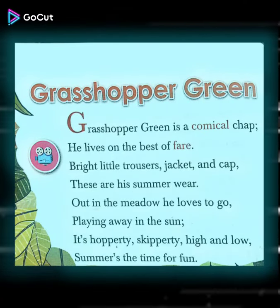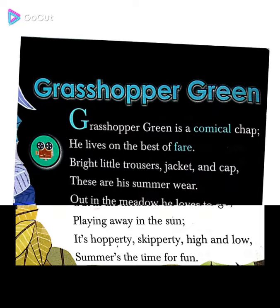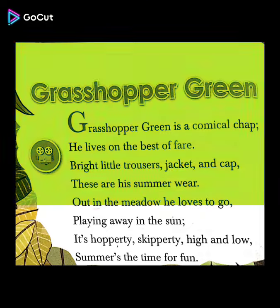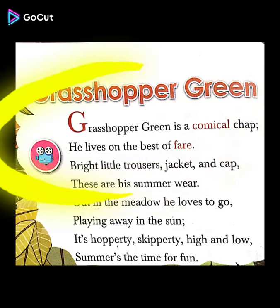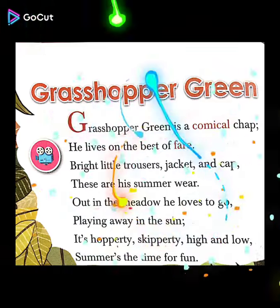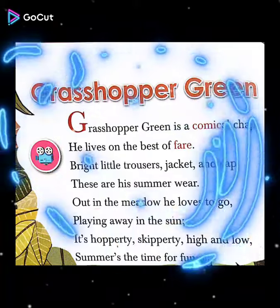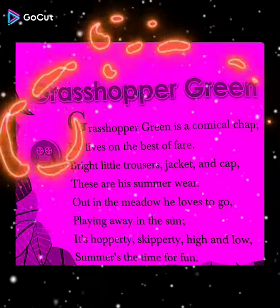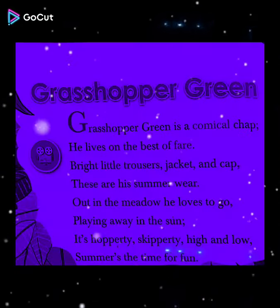So in the first verse of the poem, the poet is saying in the first line that Grasshopper Green is an amusing chap with a funny appearance. Amusing chap means funny, comical — comical also means funny. He lives on the best food, and he wears a bright pair of trousers, jacket and a cap. These are the clothes that the grasshopper wears in summer.